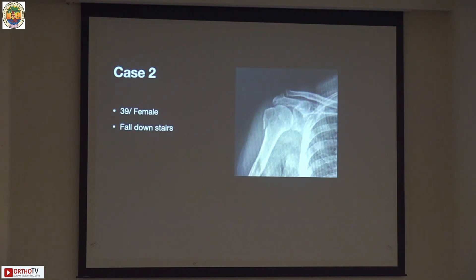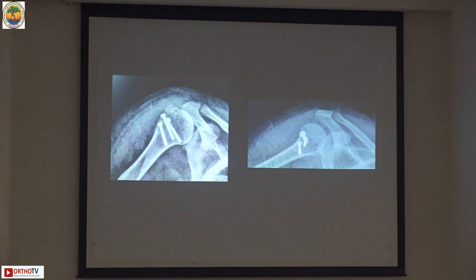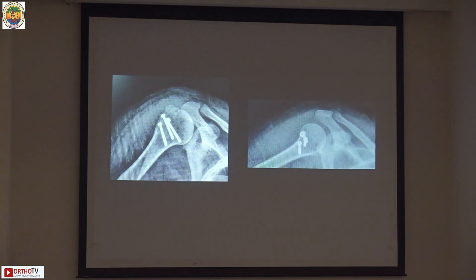The second case: a 39-year-old female with a fall down the stairs — a type 2 shearing-force fracture. I performed a hybrid fixation with screws combined with transosseous sutures, because MRI showed a partial rotator cuff tear which was also addressed. Again, a lateral mini-open approach was used.